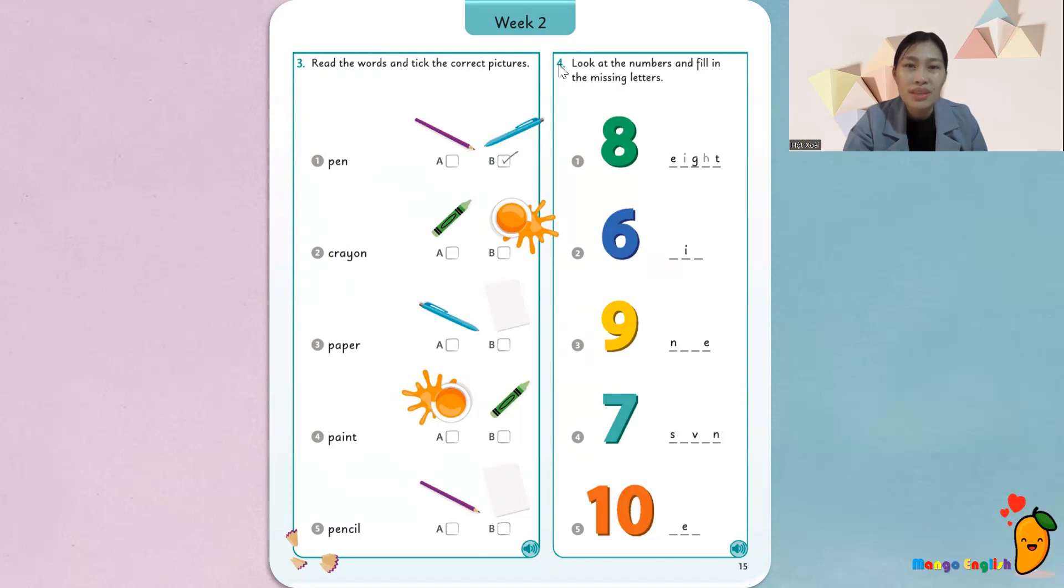Số bốn. Task four. Look at the numbers and fill in the missing letters. À, không phải là look at the pictures như bên kia nữa. Mà bây giờ look at là nhìn vào numbers. Nhìn vào các con số. And fill in. Fill là điền. Điền vào. Điền những chữ cái còn missing. Còn thiếu vào. Letters. Các chữ cái còn thiếu. Number eight. Số tám. Viết như thế nào đúng không?